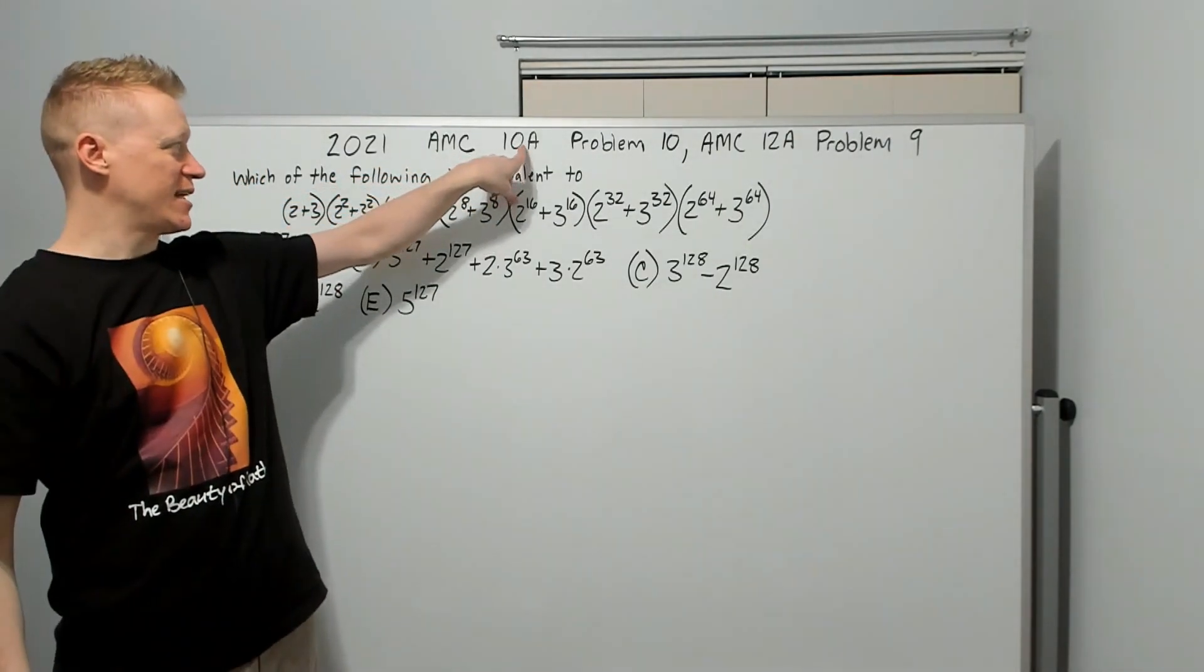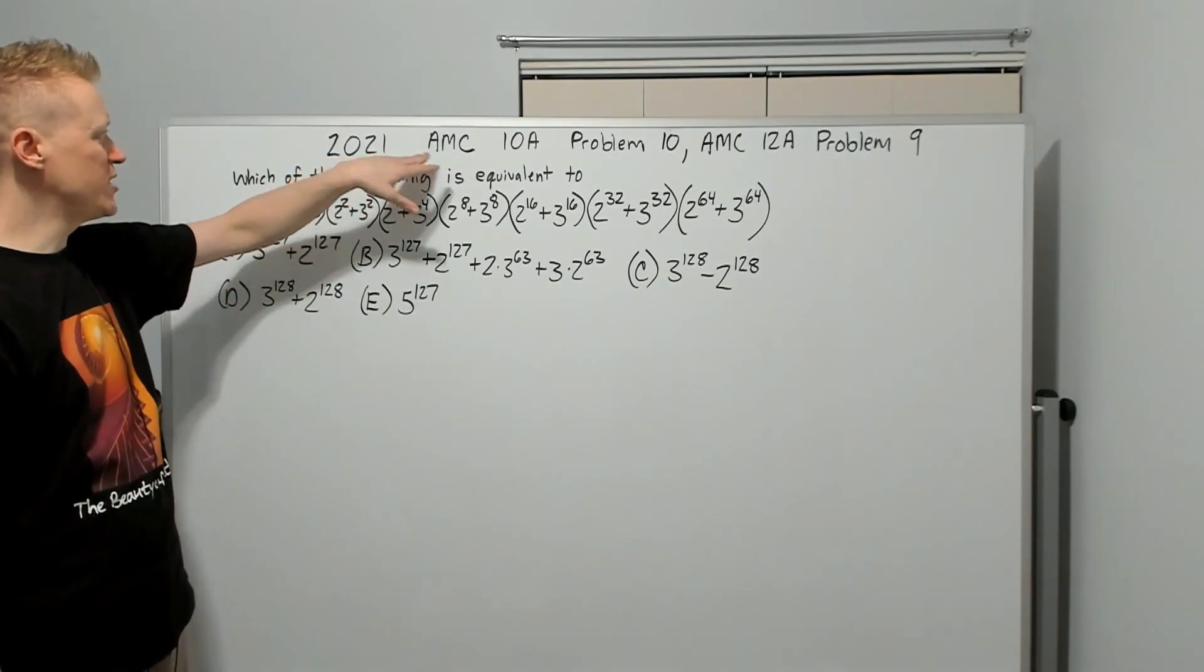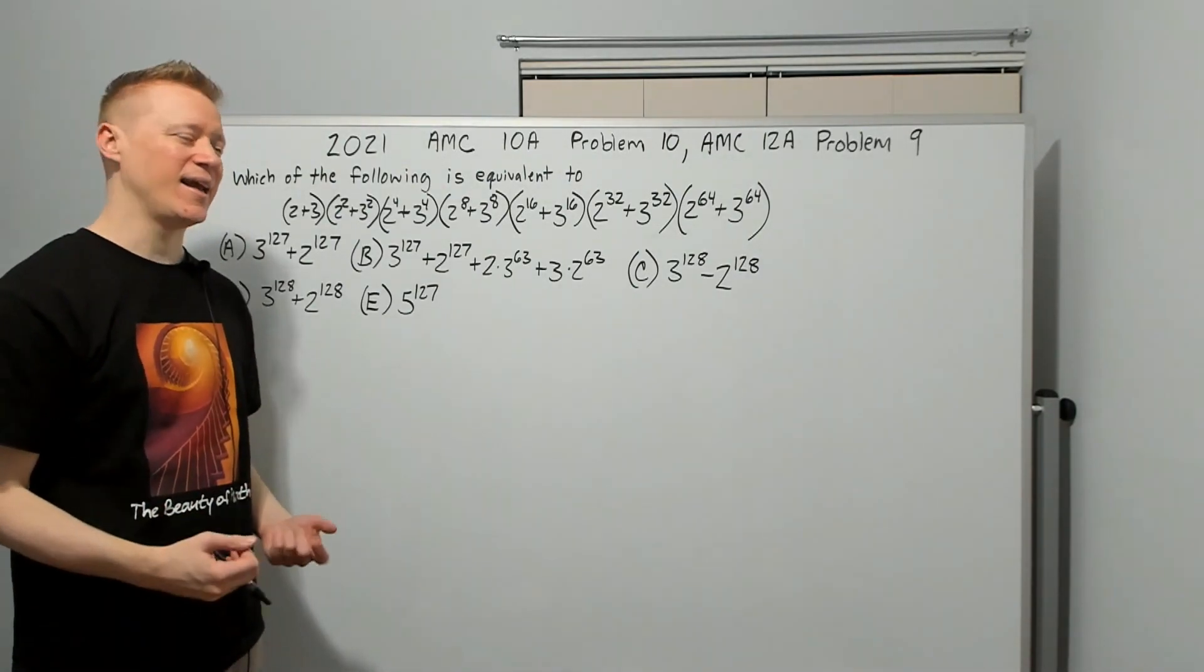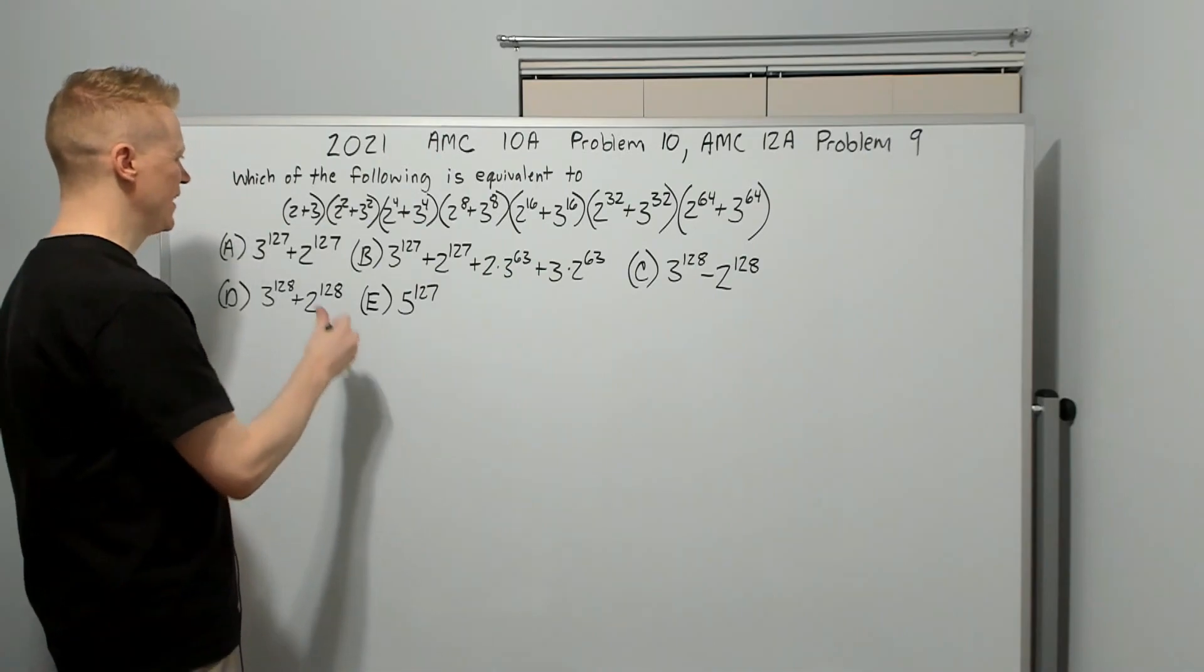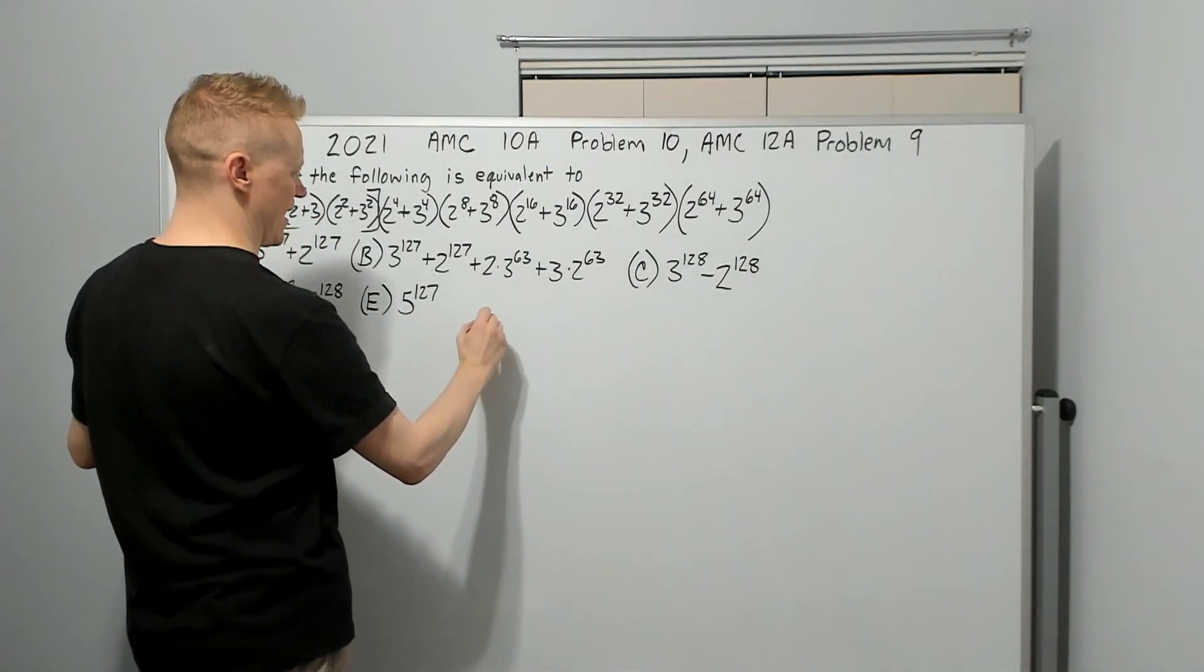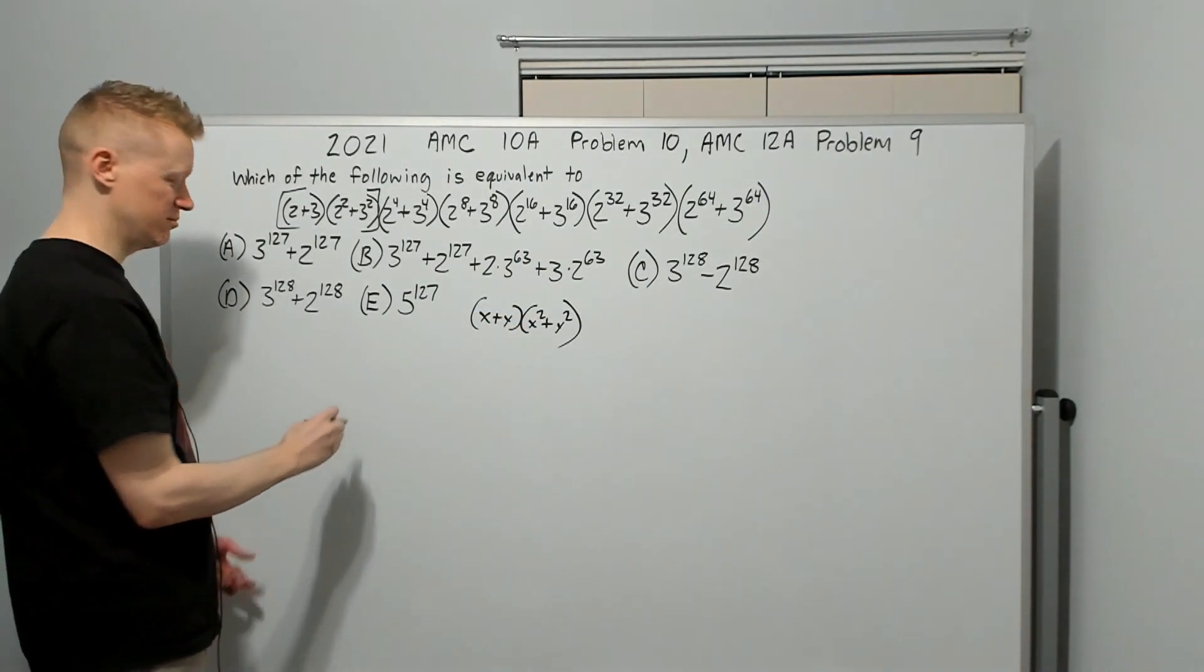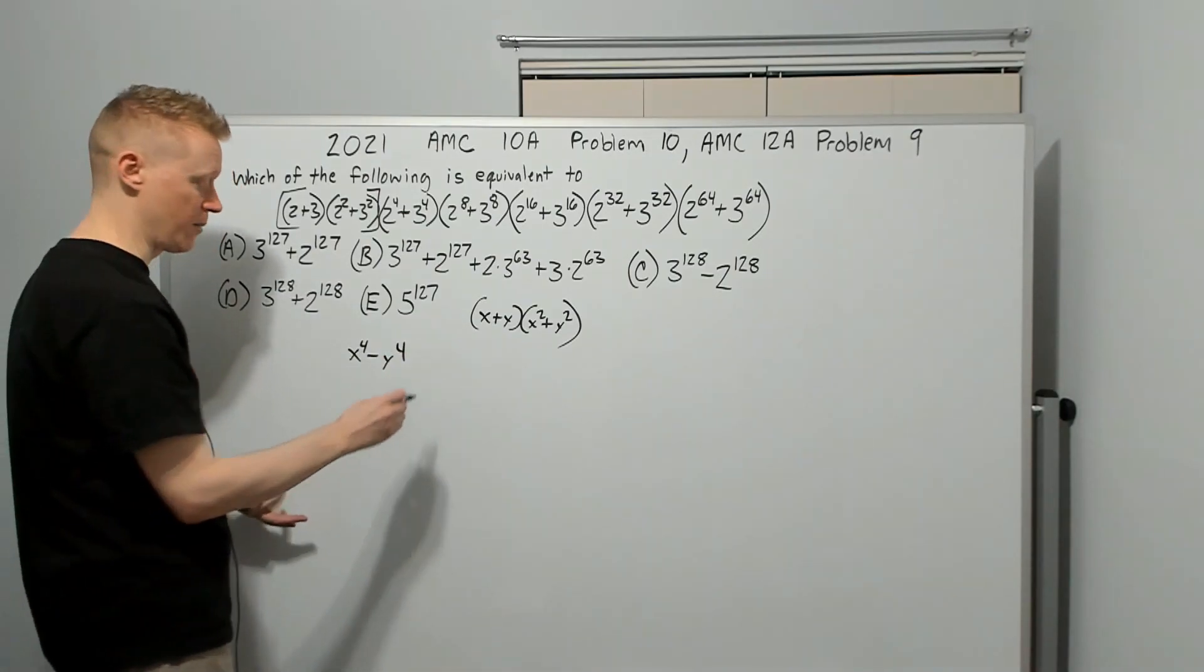The last problem of the set for 10A. 2021 AMC 10A problem 10. Which of the following is equivalent to all of this? This is, again, your experience comes to your aid. There were several times in past contests where this should look really familiar. Let's just take this part right here, for instance. If I call that x and y, let's say it's x plus y and you've got x squared plus y squared.